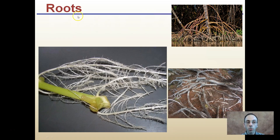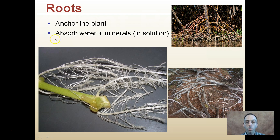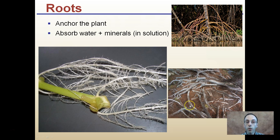Roots in general anchor the plant and absorb water and minerals in solution - it's important that it's in a water solution. For anchoring, like mangroves growing down in Florida to help support the tree, some roots protrude above the soil and continue down. All of these help anchor the plant and absorb water and minerals.